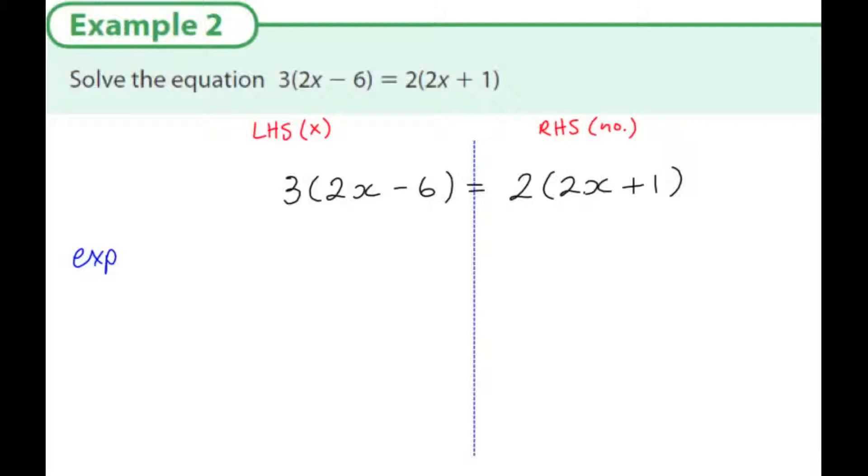Before I can start doing this, I must expand or multiply out the brackets first. So if I multiply 3 by 2x, I get 6x. 3 by minus 6 is minus 18. The right-hand side is equal to 2 times 2x, which is 4x. And 2 times plus 1, which is plus 2.